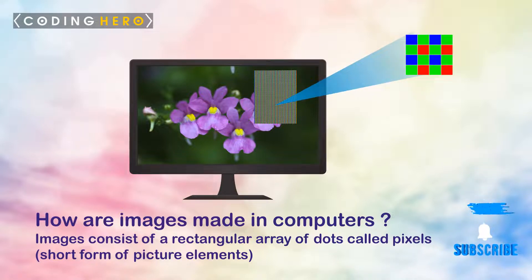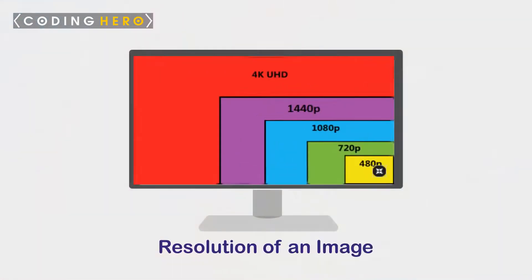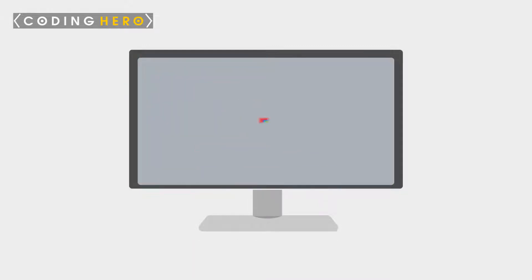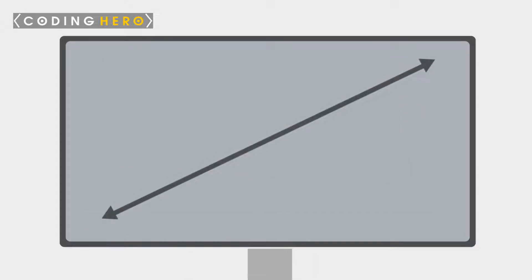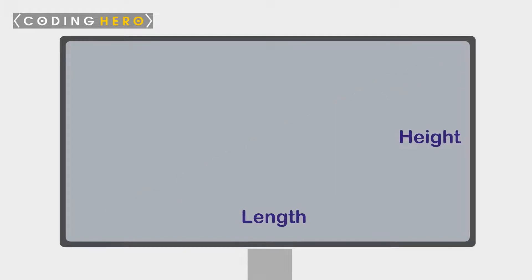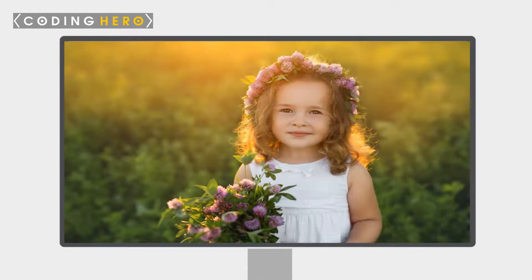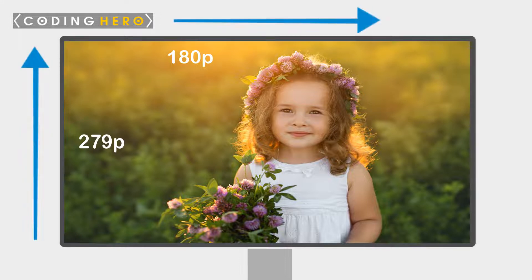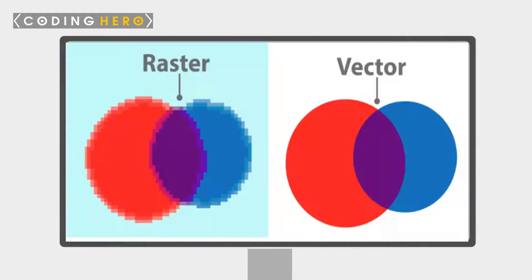How are images made in computers? Images consist of a rectangular array of dots called pixels, short for picture elements. The physical size of an image depends on the resolution of an image. Resolution is a rectangular area on which an image is displayed — that is, the number of pixels along the height and the number of pixels along the length. You can check the resolution of an image stored on a computer by hovering over it using a mouse. For example, dimensions 279 by 180 means 279 pixels along the height and 180 pixels along the length of an image.